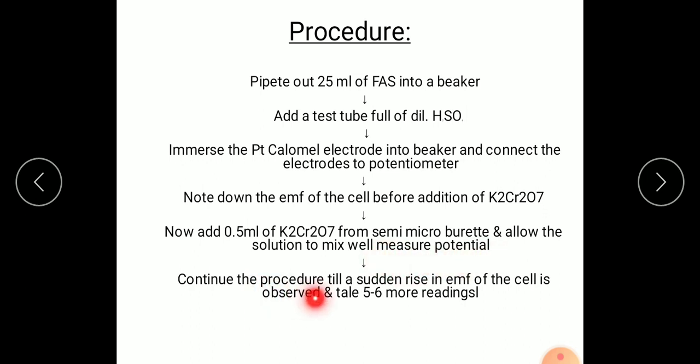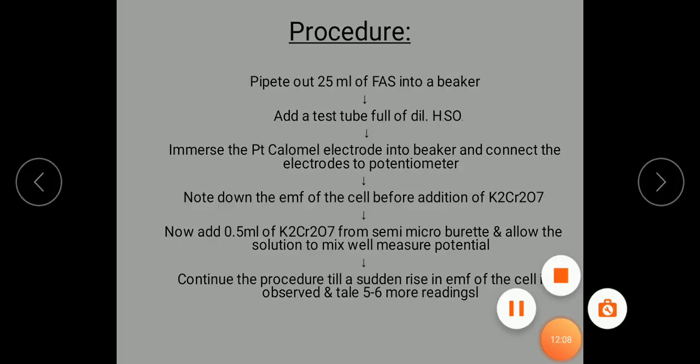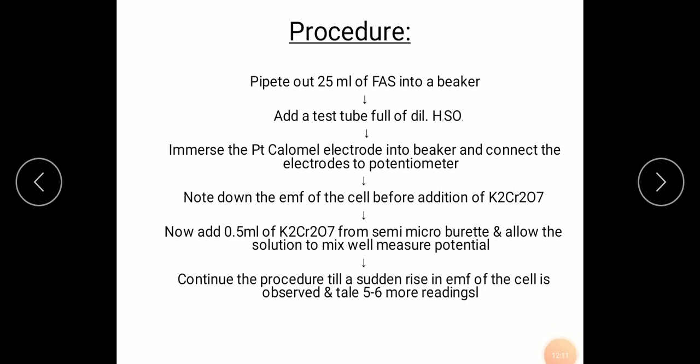Continue the procedure till a sudden rise in the EMF of the cell is observed. As we add K2Cr2O7 in 0.5 ml each time, Fe plus 2 undergoes oxidation to Fe plus 3 and chromium present in K2Cr2O7 undergoes reduction from plus 6 to plus 3. Both oxidation and reduction process are taking place simultaneously. With this, change in EMF occurs. We can observe the change in EMF and repeat this for 10 ml.